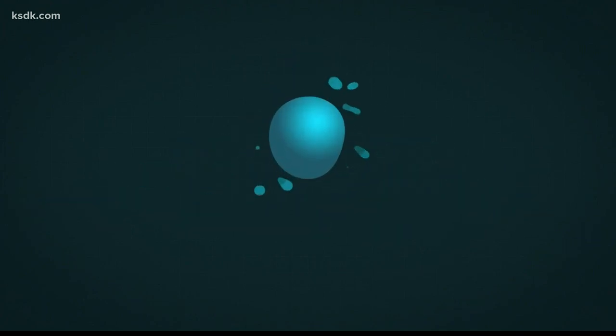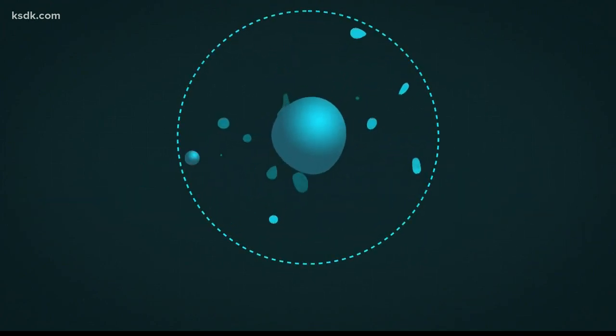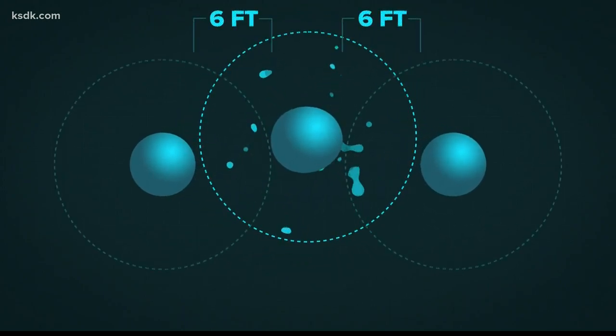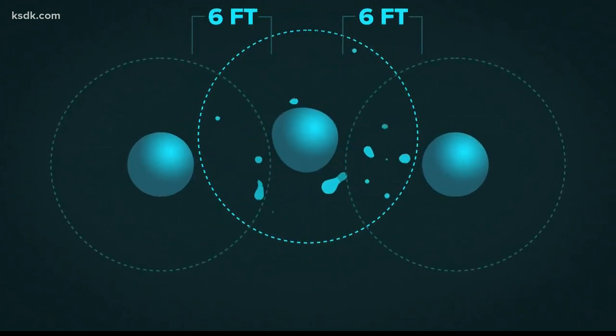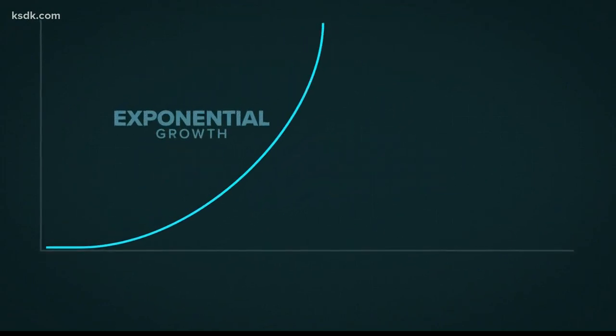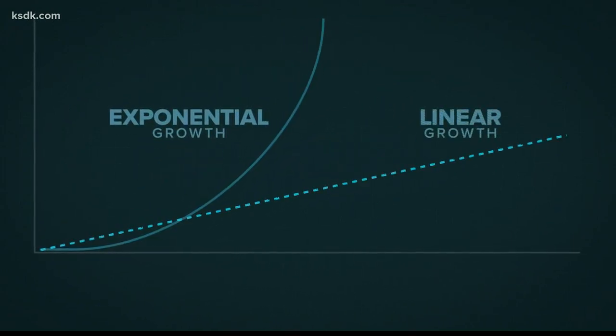As others do the same, social distance and limit interactions, the contagion slows. Exponential growth turns to linear growth. Cases increase, but at a much more manageable rate.